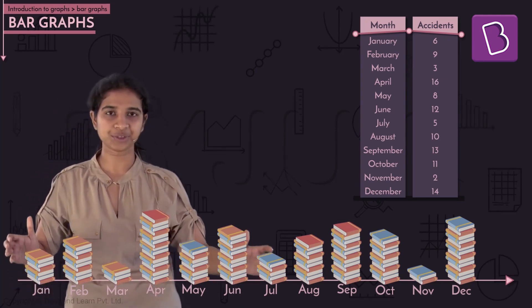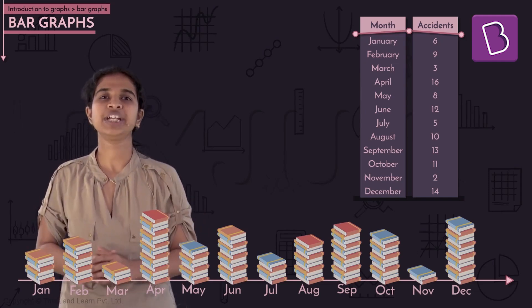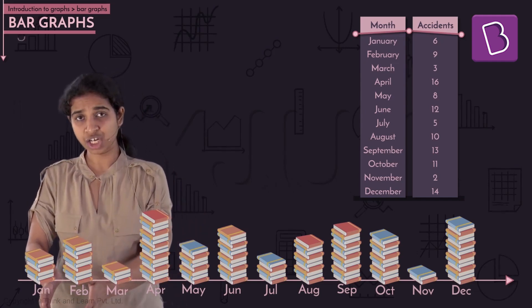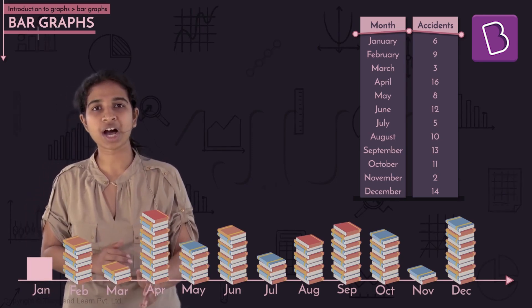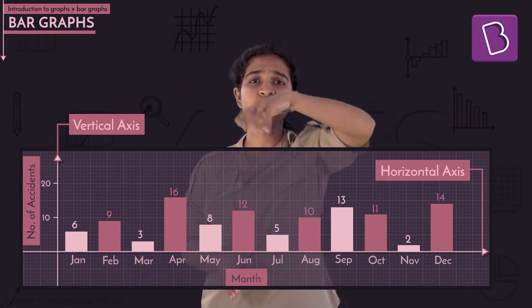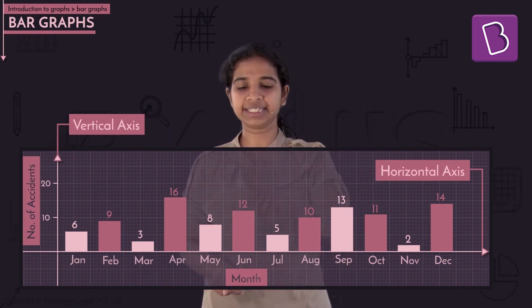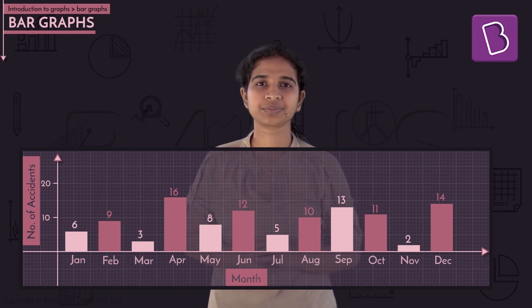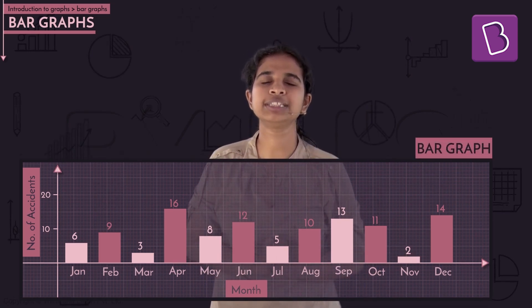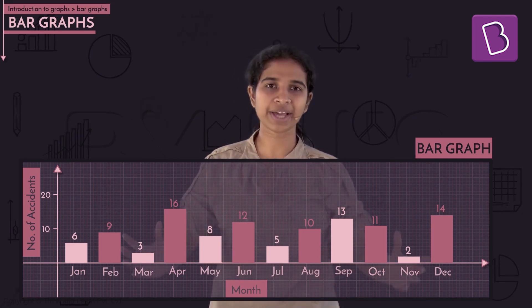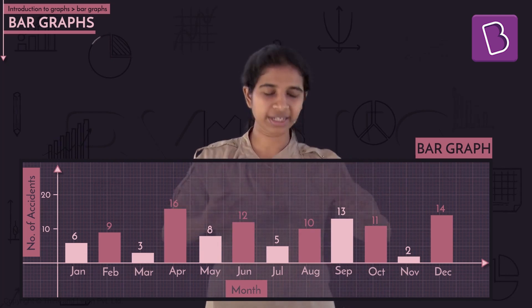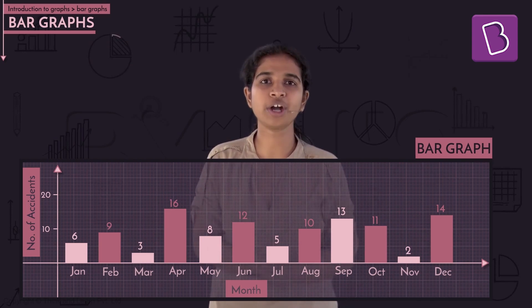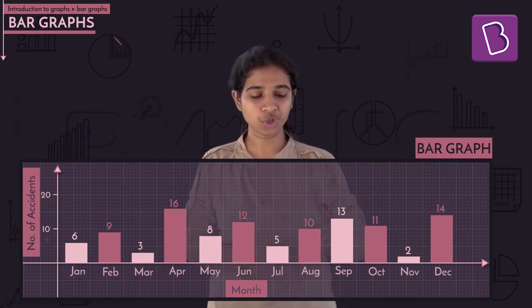Instead of visualizing these as books, we can make them into bars. January is simply a bar or rectangle of height six; February is a bar of height nine, and so on. If we draw an axis with a ruler next to it to measure lengths, you can clearly see January comes at six accidents, February at nine. What we call this is a bar graph — taken directly from the concept of stacking quantities and comparing heights.